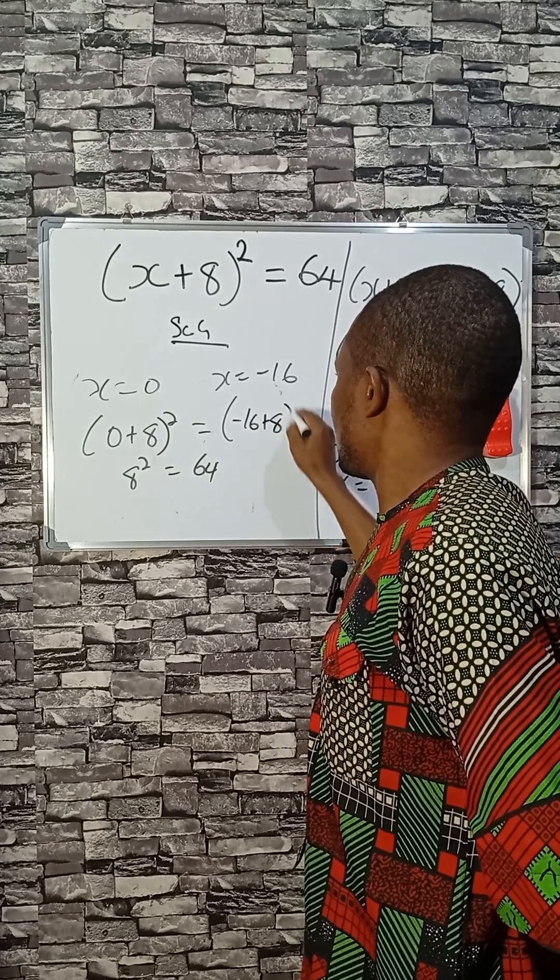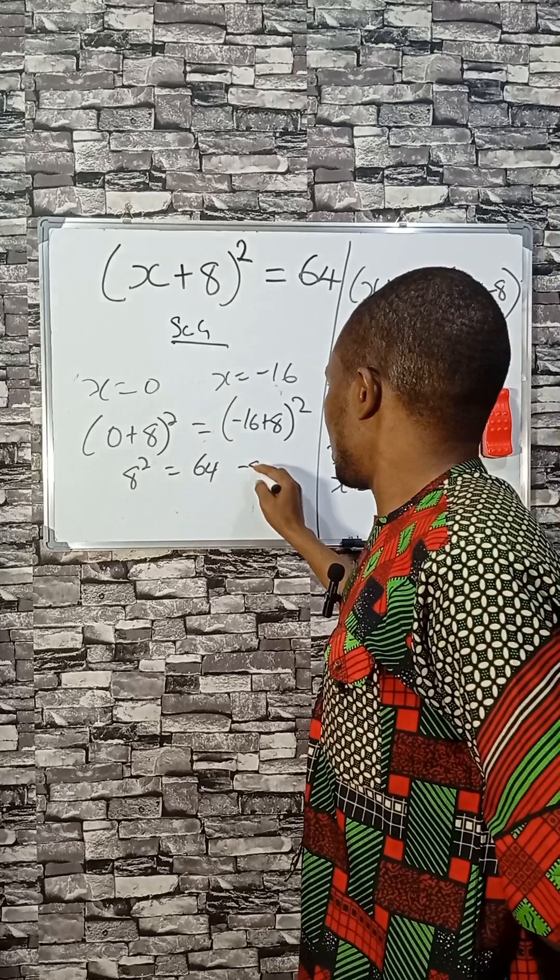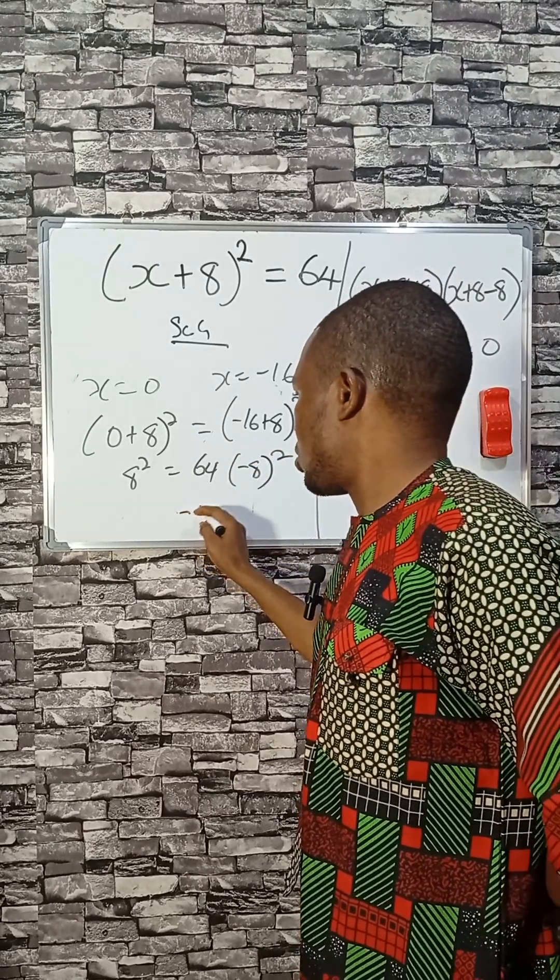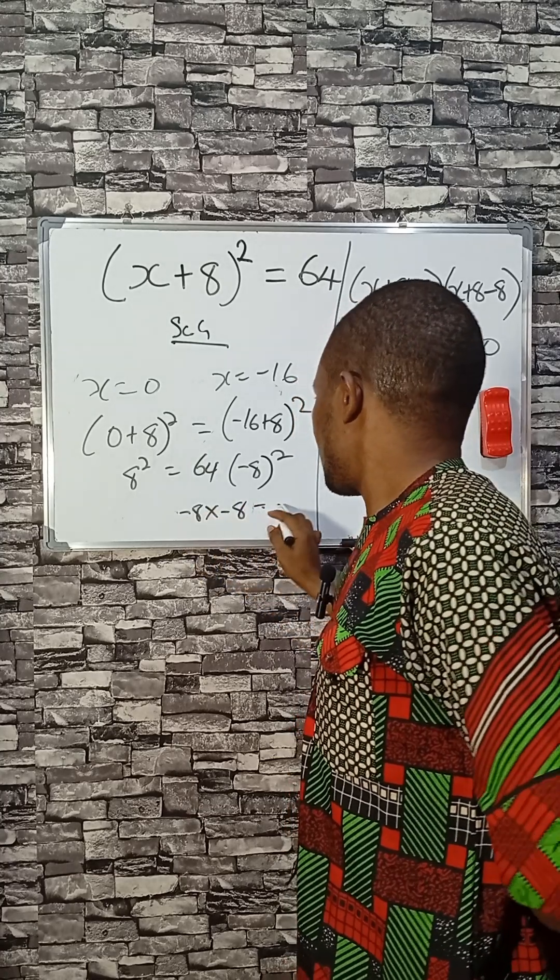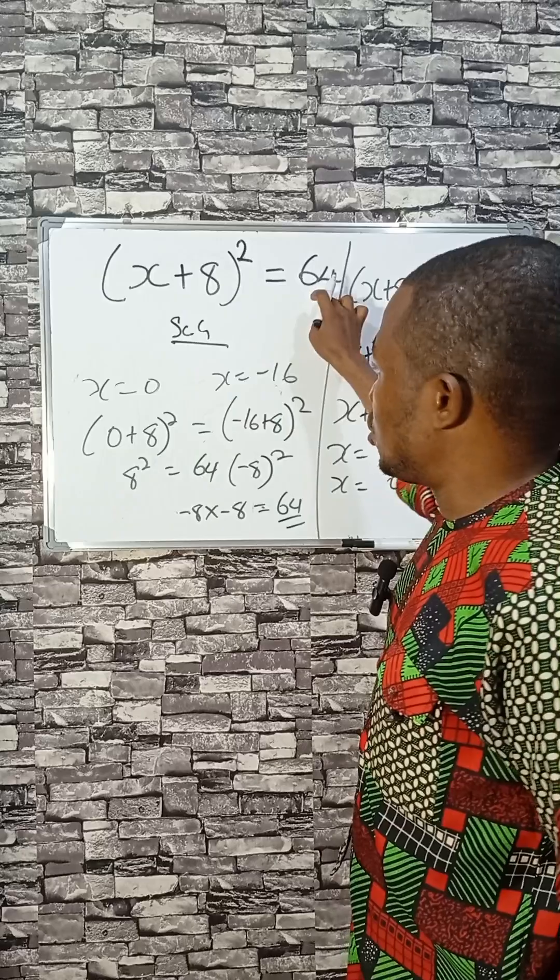Then if X equals minus 16, we have this as (-16+8)². Minus 16 plus 8 is minus 8. Minus 8 squared—since this is repeated, that's minus 8 times minus 8—that will be plus 64.